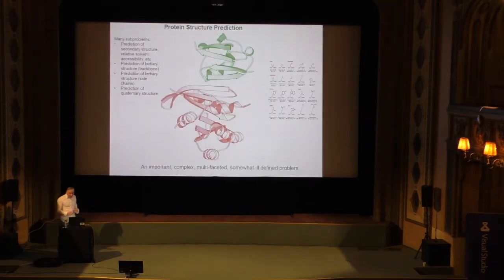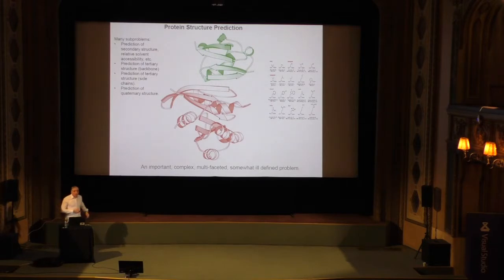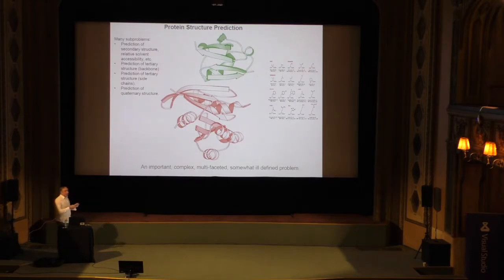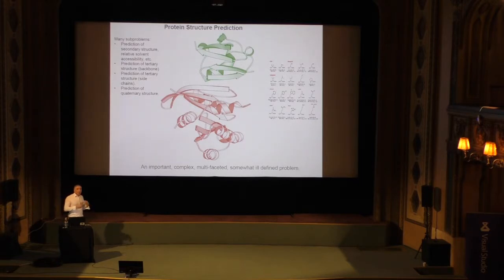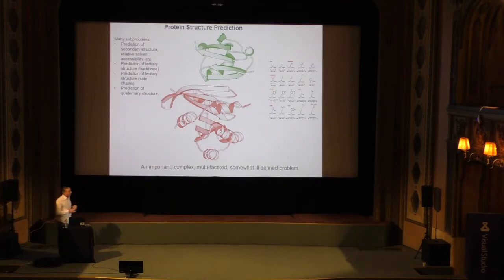Let me say a few things about protein structure prediction, which is a very important problem. Your genes in your DNA — roughly 20,000 genes — code for proteins. Proteins are sequences made of 20 natural amino acids, with typical length of about 500 amino acids. They fold up into very complex 3D structures which determine their function — which proteins they bind to, whether they bind to DNA to control gene expression, or bind to small molecules.